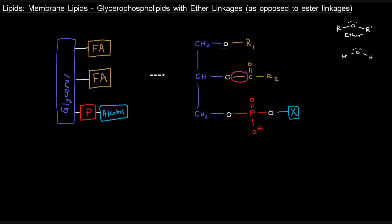So that's what's going on up here. We have an ether linkage. We have the carbon of the glycerol backbone and the carbon of some R group. And of course, the rest remains the same. We still have the phosphate group and some alcohol. But this is a glycerophospholipid with an ether linkage instead of an ester linkage.